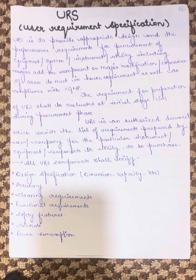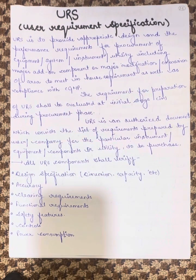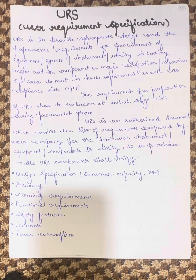In this video, we are going to study about the URS, DQ, IQ, OQ and the PQ. DQ, IQ, OQ and PQ we have already studied under the validation guidelines by WHO. You can refer to that video as well, but in this video I will also explain in detail.